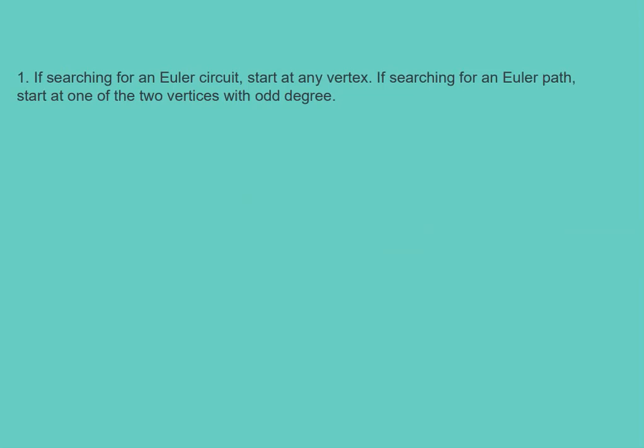If you'll remember, the theorem for an Euler circuit states that all vertices must have an even degree. If an Euler path exists, then the graph can have at most two vertices with an odd degree.